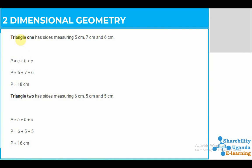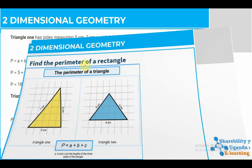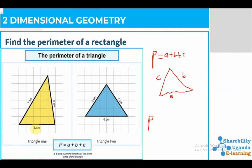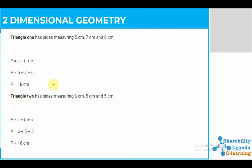For triangle one, the sides measure five, seven, and six centimeters. Using Perimeter equals a plus b plus c, that is five plus seven plus six, giving a total measure of 18 centimeters. For triangle two, which has sides measuring six, five, and five, we add those together to get the total measure of that shape.